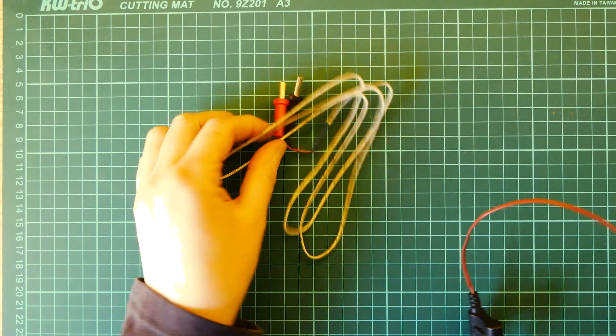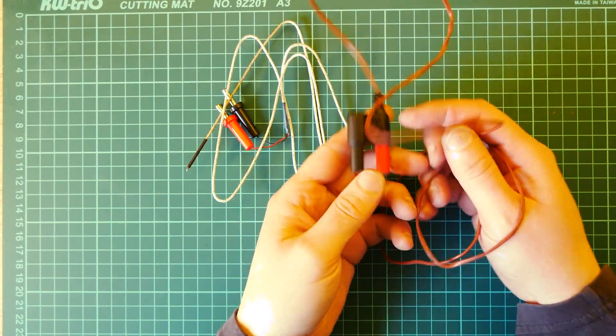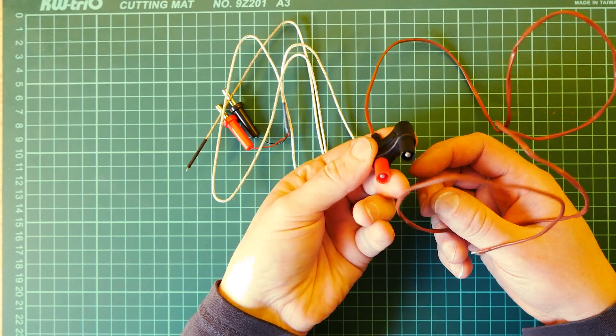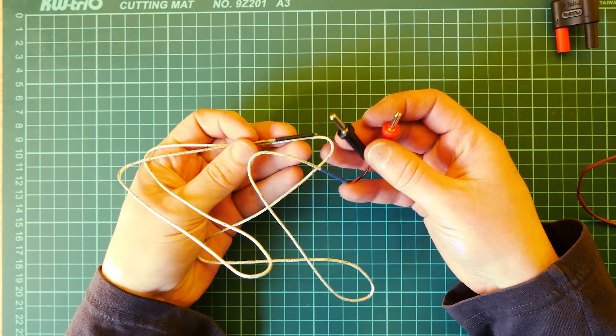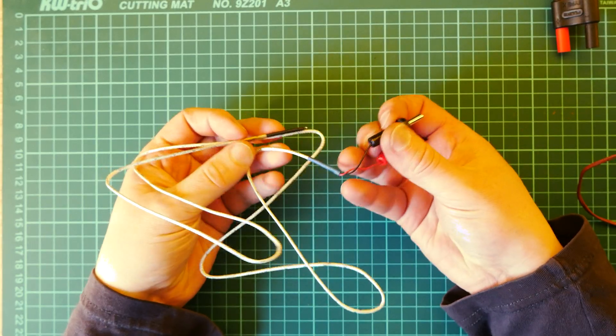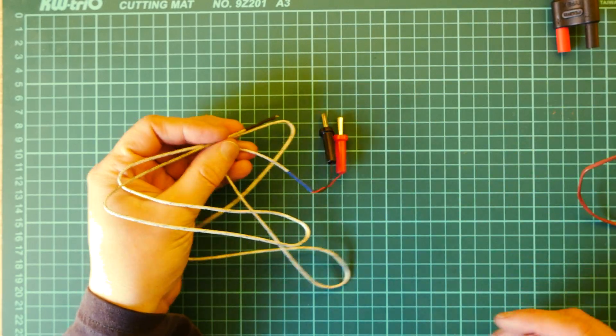Props just for comparison, this is Fluke 117B plus thermocouple. So as you can see it's more robust. And this is just tiny wires. But it works, it works.